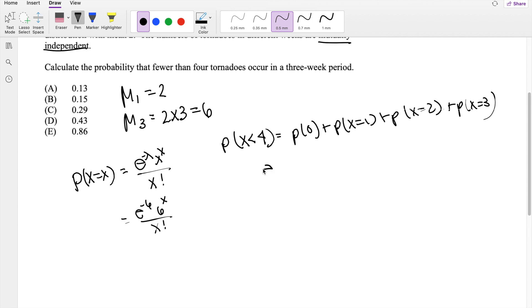So I'm going to factor out the e to the negative 6. And then when I plug in 0, 6 to the 0 power is just 1, 1 over 0 factorial is still 1. When I plug in 6, that's 6 to the first power over 1.